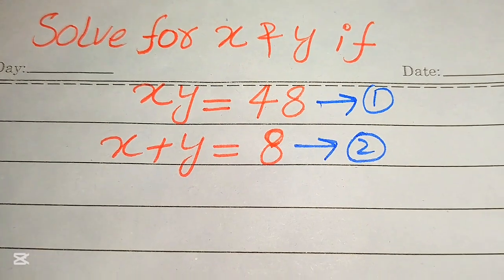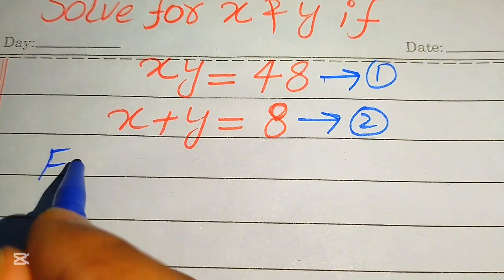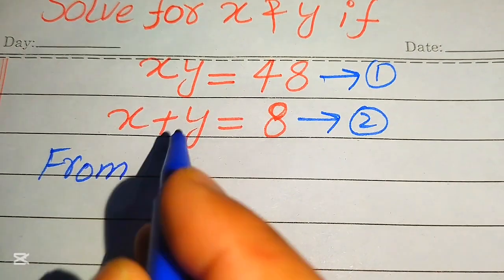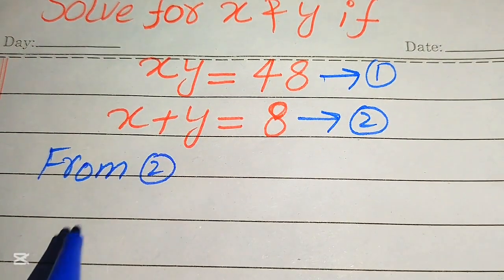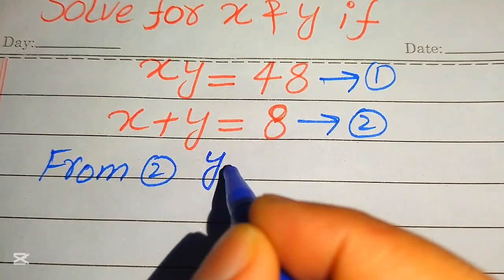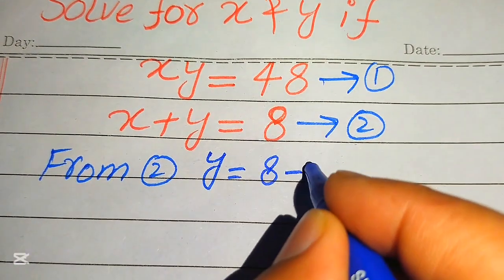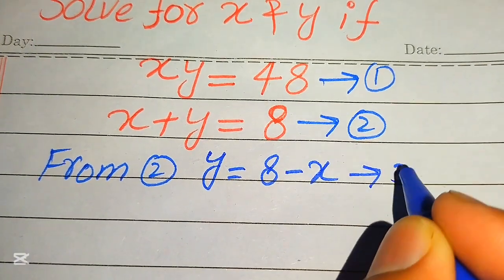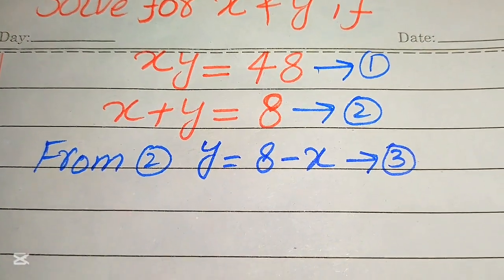We need some simplifications. First we need to focus on equation number 2, so that from equation number 2 we move x to the right hand side and we get the value of y equals 8 minus x, and we call this equation number 3.